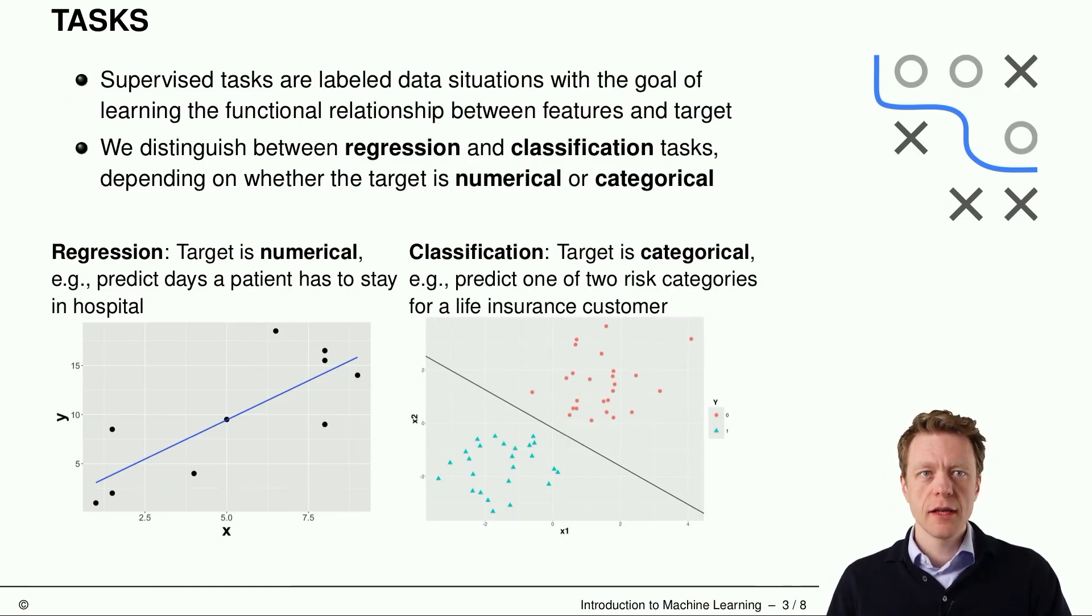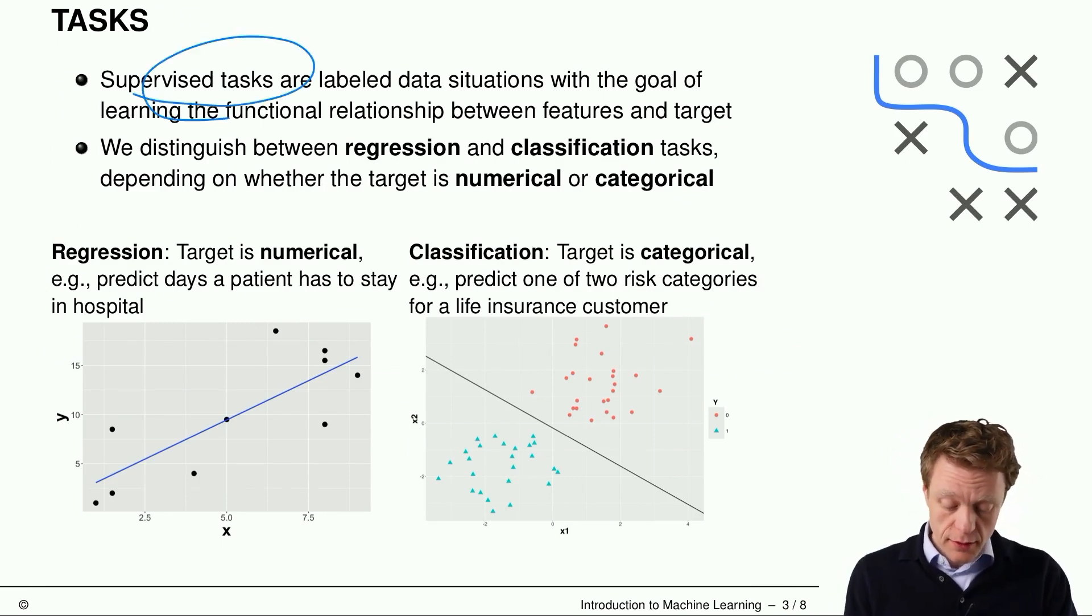Next concept is a task. Supervised tasks are labeled data situations where we want to learn exactly this functional relationship between features and target. And we distinguish between two main tasks that are regression and classification. And the only thing that we need for this distinction is to know the scale of the target variable y.